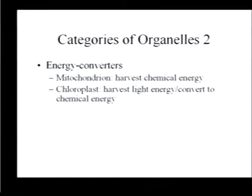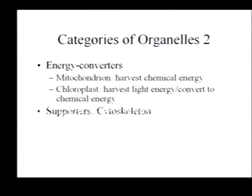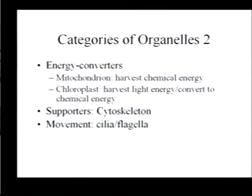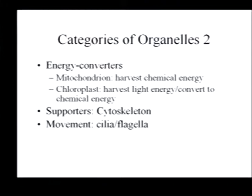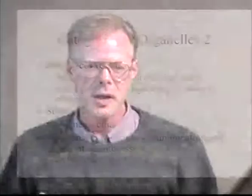Support structures for the cell include the cytoskeleton, with several components. Movement is provided by cilia and flagella. Junctional complexes allow cells to communicate with each other — especially important in multicellular organisms where cells must organize into tissues, organs, and organ systems. Tissues are under a lot of stress and will rip apart if there aren't solid junctions between cells.